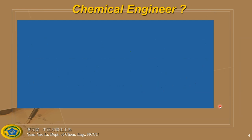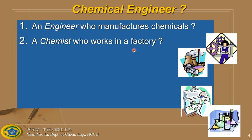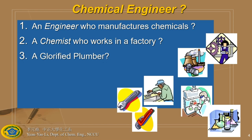Now that we've discussed the definition, let's ask: why do you want to become a chemical engineer? Again, a quiz. Option one: an engineer who manufactures chemicals. Option two: a chemist who works in a factory. Option three: a glorified polymer. Which one is the correct answer?